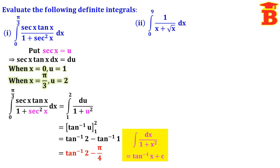Second problem: integral from 0 to 9 of 1 divided by x plus root x, dx. Here we take root x as u. So we put root x equal to u. Squaring both sides, x is equal to u squared. Differentiating, dx equals 2u du.